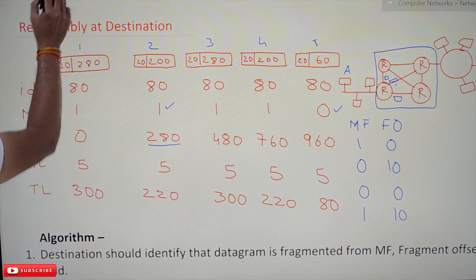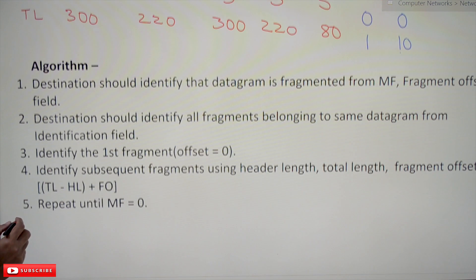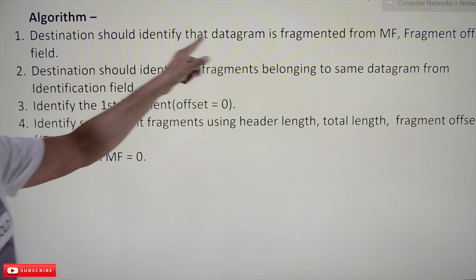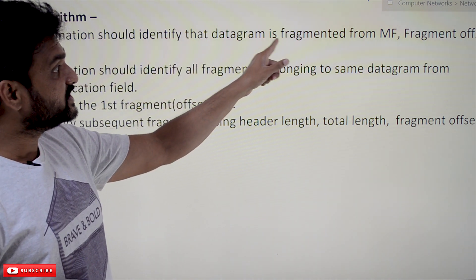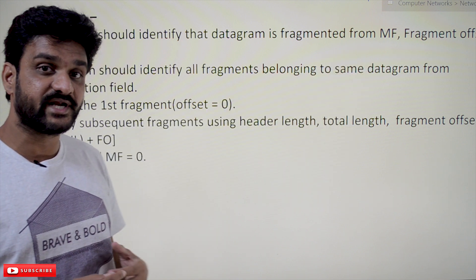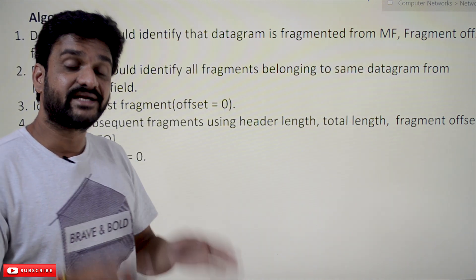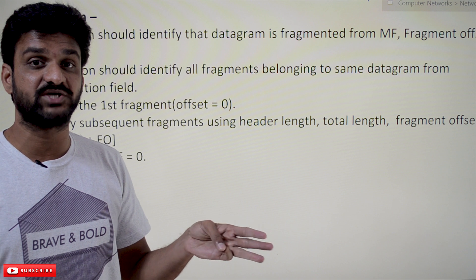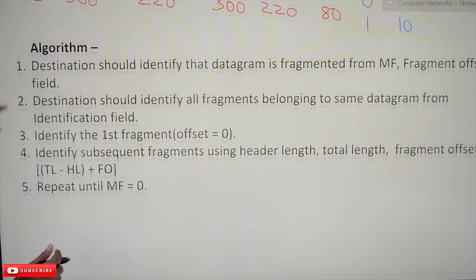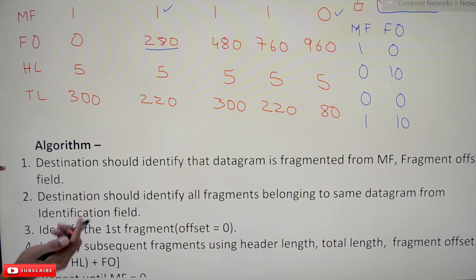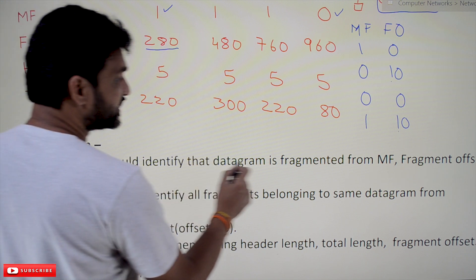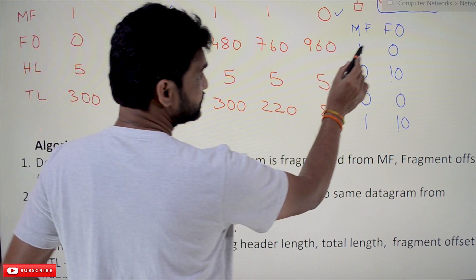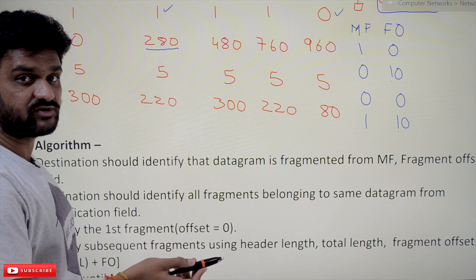Now let's look at the algorithm used for reassembly. The first step: the destination should identify whether the datagram has been fragmented or not. The three different possibilities with which we can say that the datagram has been fragmented are: MF is equal to 1 and fragment offset is equal to zero.